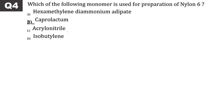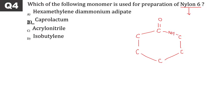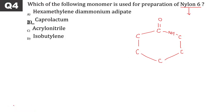Question number 4: Which of the following monomer is used in preparation of nylon 6? Draw the structure: C=O on first carbon, then carbons 2 through 6, and NH — it is called ε-caprolactam. Alpha, beta, gamma, delta, epsilon carbons from the carbonyl — this epsilon caprolactam is the monomer of nylon 6, option number B.